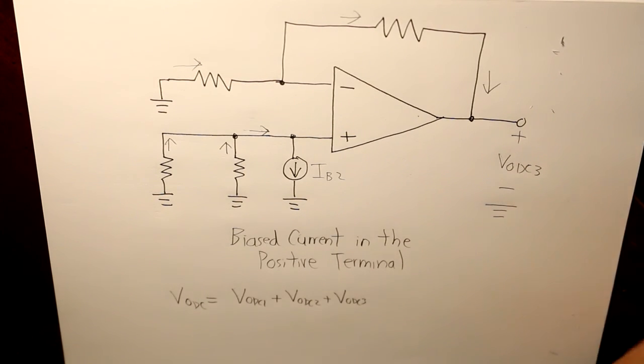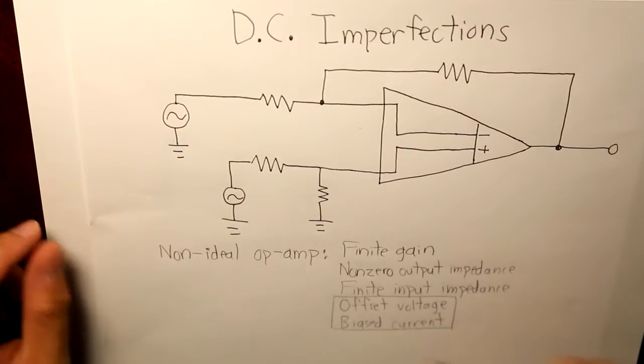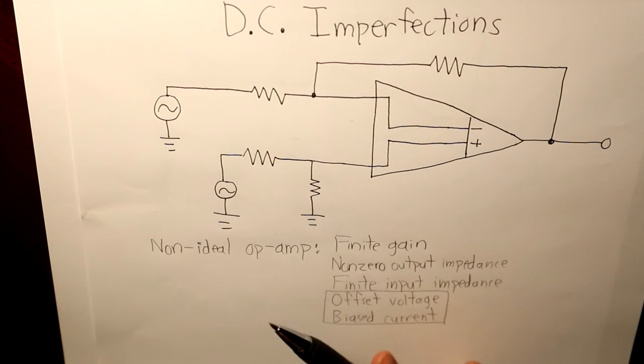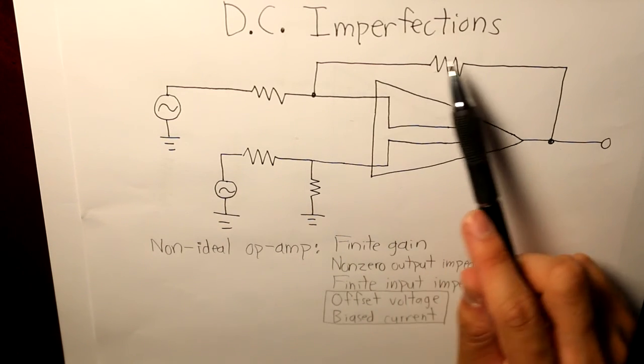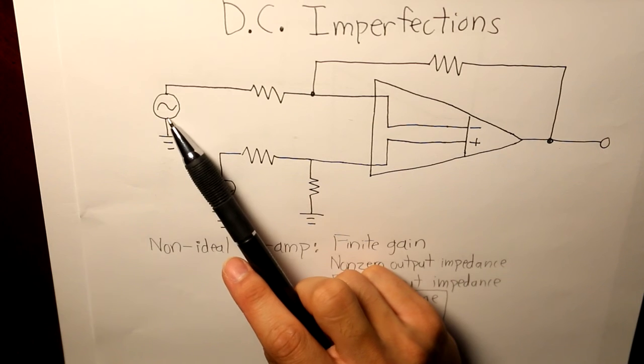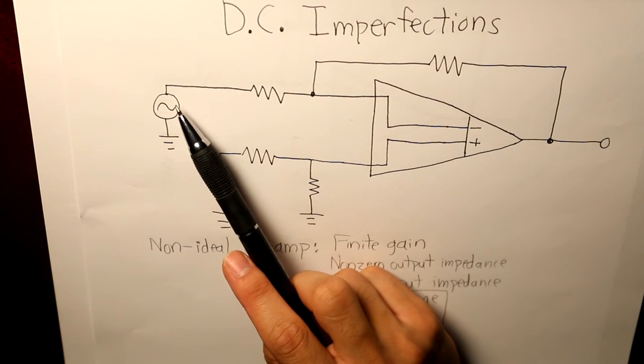Now, another thing I want to clarify is the AC source. So when we take into consideration of the DC imperfections, we actually short out the AC source.